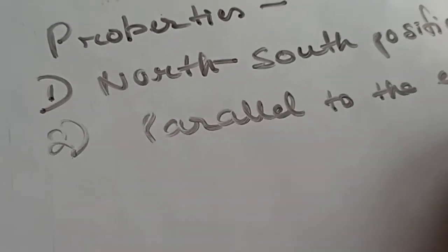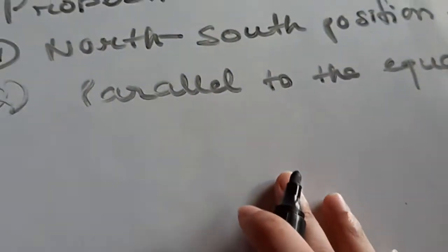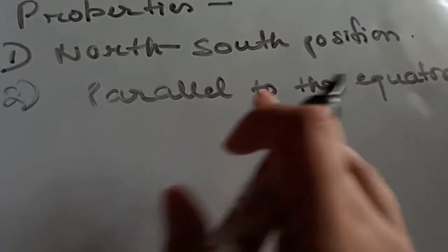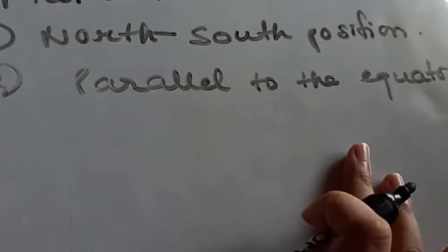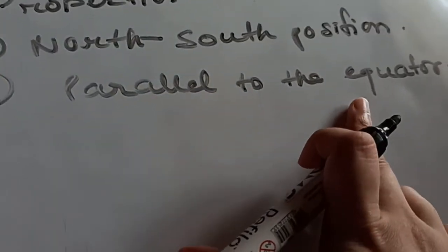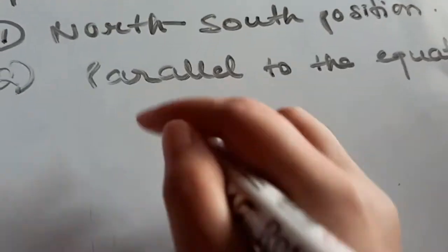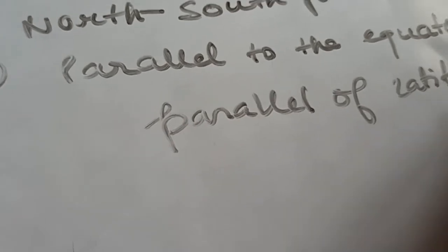We have a total of 179 latitudes and all the latitudes are parallel to the equator, or all the lines of latitudes are parallel to the equator. That is why we also call the latitudes as the parallels of latitude, because they lie at an equidistance or parallelly from each other.